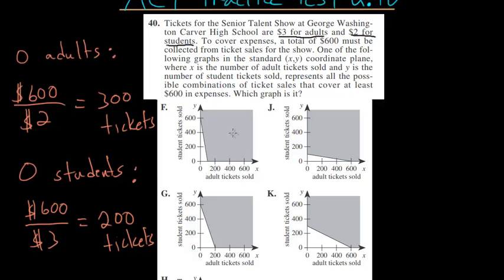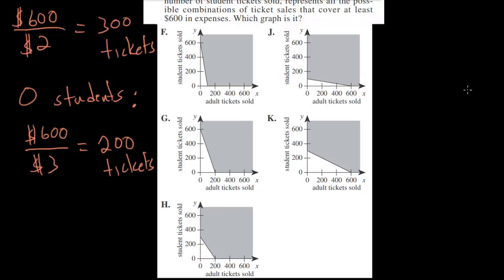Essentially, we're looking at one of these graphs where the Y intercept is at 300, so that's when zero adults buy tickets. And the X intercept is when zero students buy tickets, and we know that would be 200 tickets.